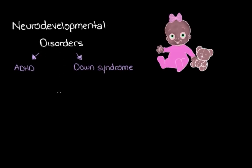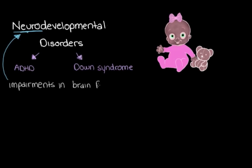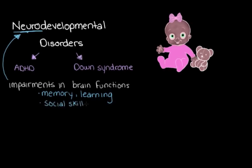Before we talk more about these and some of the other neurodevelopmental disorders, let's start off by breaking this term down so we can figure out what exactly a neurodevelopmental disorder even is. We say 'neuro' here, and neuro refers to the brain, because with each of these different disorders we see impairments in some of our brain-related functions — things like our memory, our learning abilities, our social skills, and our ability to make movements and maintain our self-control.